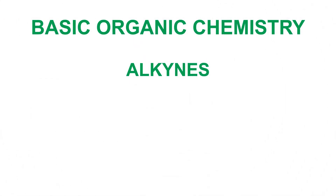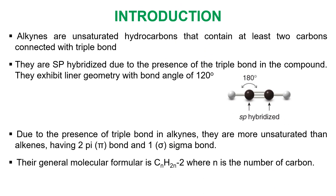Welcome to another basic organic chemistry class. In today's class we'll be looking at alkynes. Alkynes are the unsaturated hydrocarbons that contain at least two carbons connected by triple bonds, meaning that the least member of this family must contain two carbons.